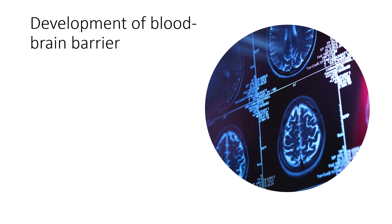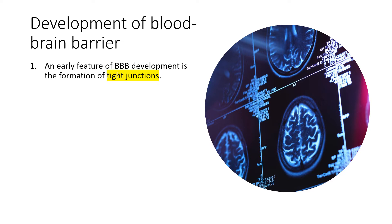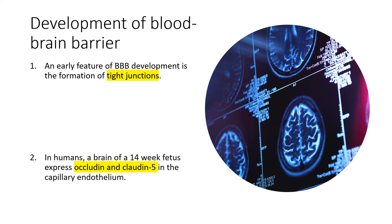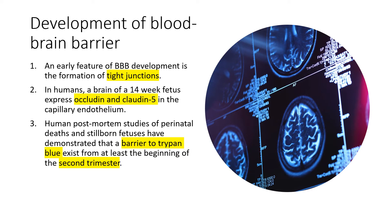An early feature of blood-brain barrier development is the formation of tight junctions. The proteins required — occludin and claudin-5 — are seen in the brain of a 14-week fetus, showing that tight junctions form by 14 weeks. Post-mortem studies of perinatal deaths and stillborn fetuses have demonstrated that a barrier to trypan blue exists from at least the beginning of the second trimester. The blood-brain barrier matures during fetal life and is well-formed by birth.